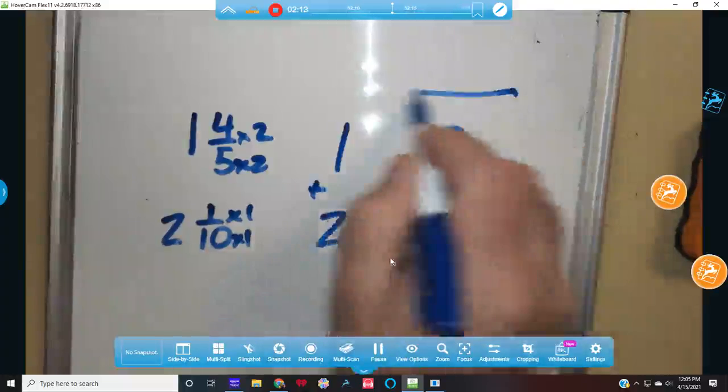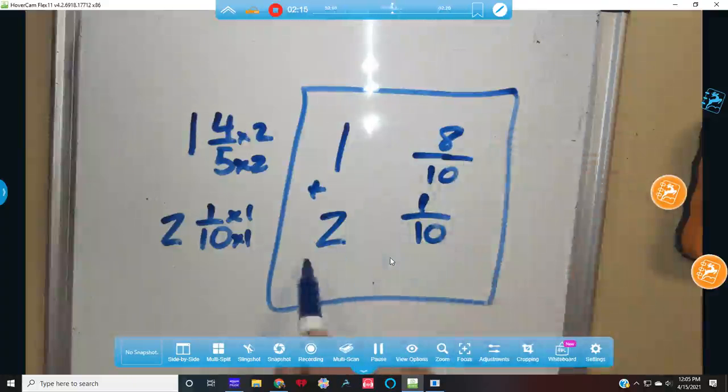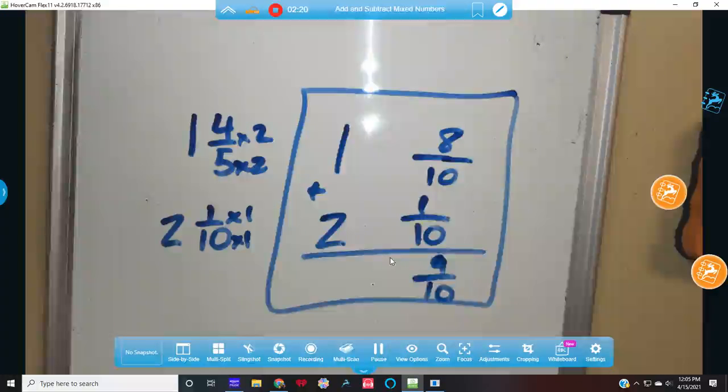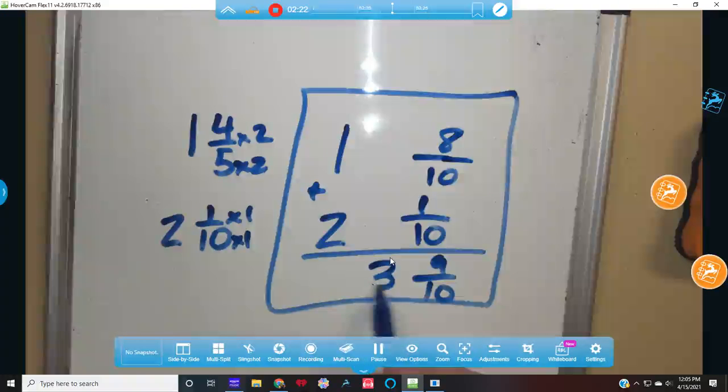Now I can do my addition problem. I add the fractions. 8 plus 1 is 9, my denominator stays the same. 1 plus 2 is 3. I get 3 and 9 tenths.